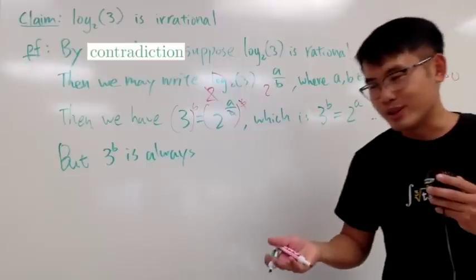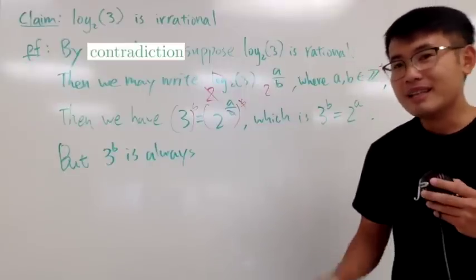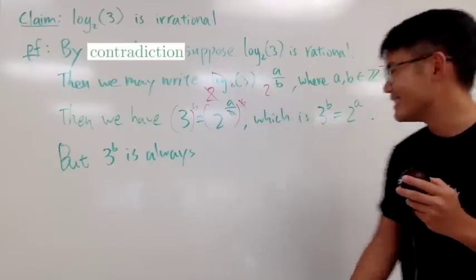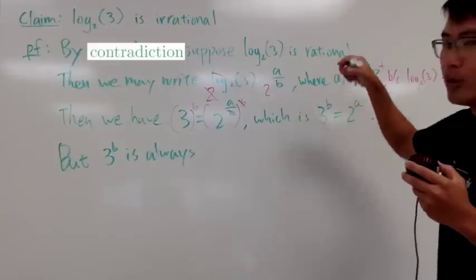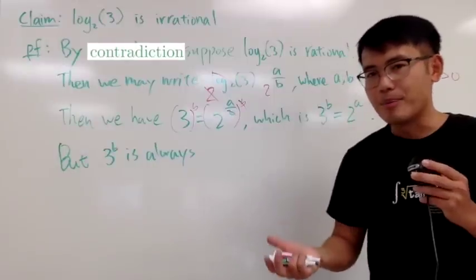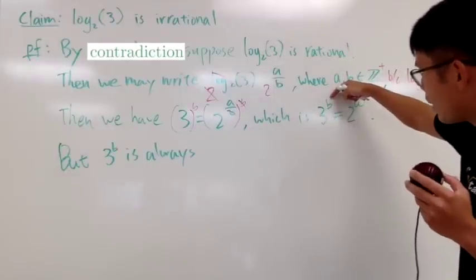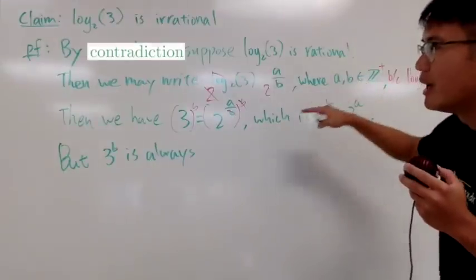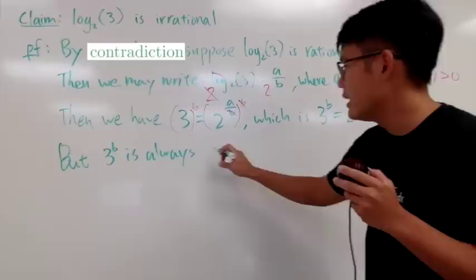3 to the b is always—when you're doing a number theory question whatsoever, we're going to prove, right? Think about the even and odd properties. Because this right here, 3 to the b, when you have a base that's an odd number to an integer power, positive integer power, this right here will always be odd.